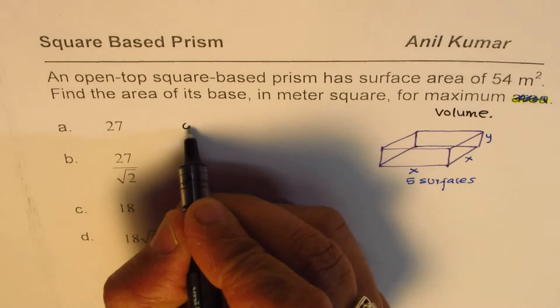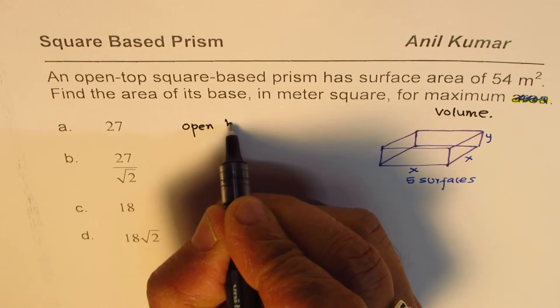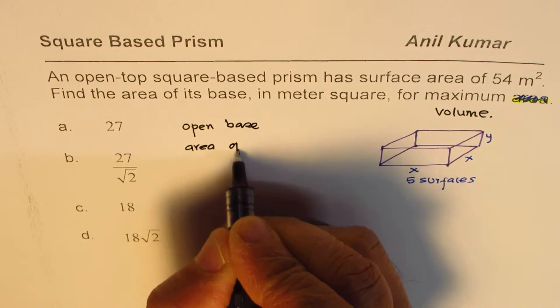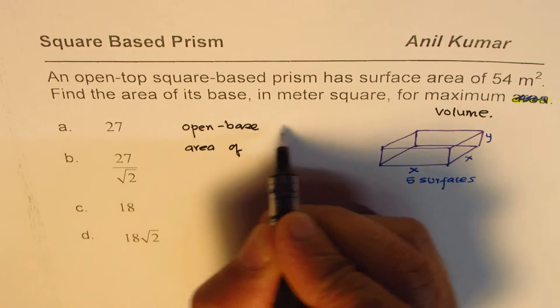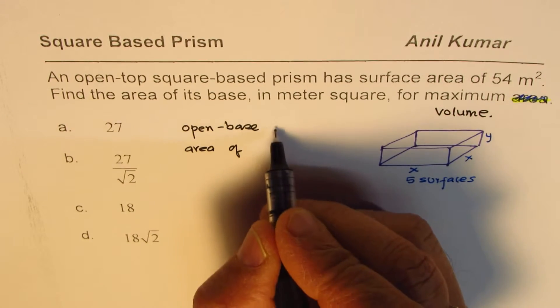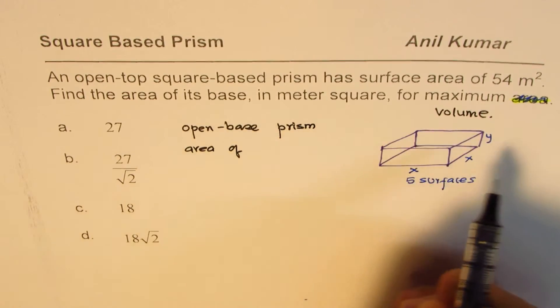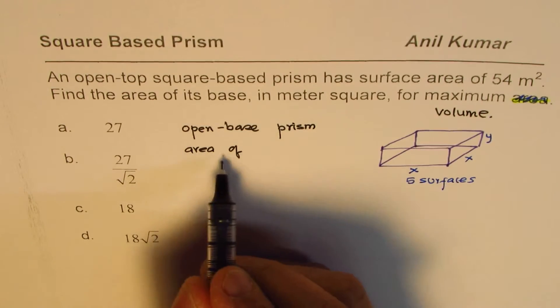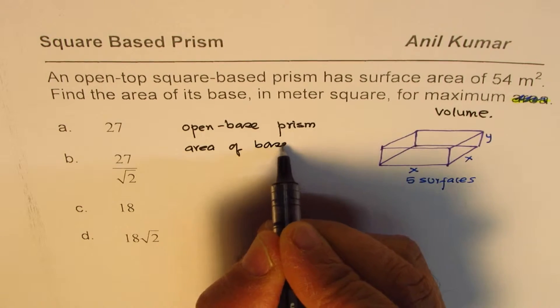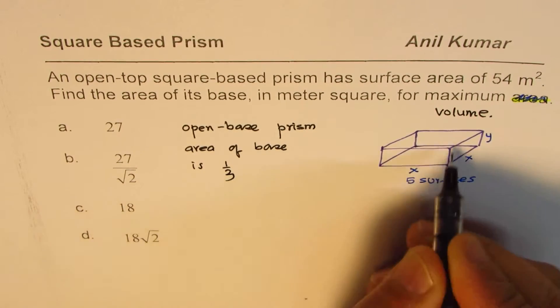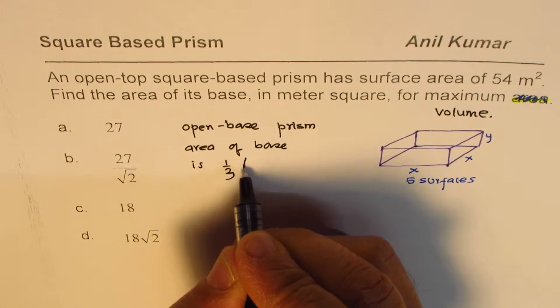For open-base prism, remember this: area of base is one-third of total area—one-third of total area A.